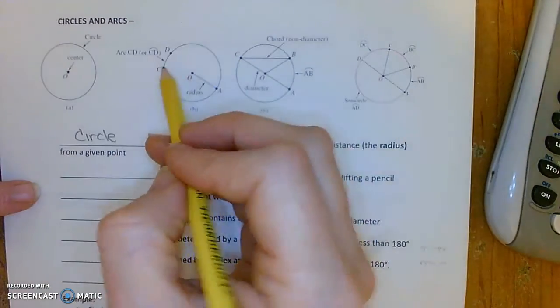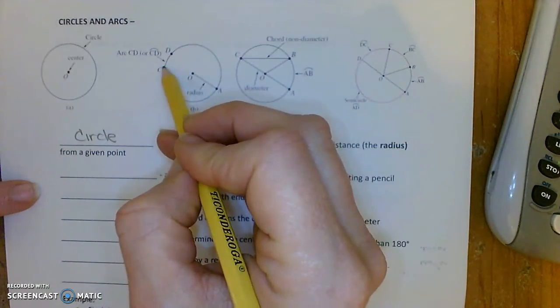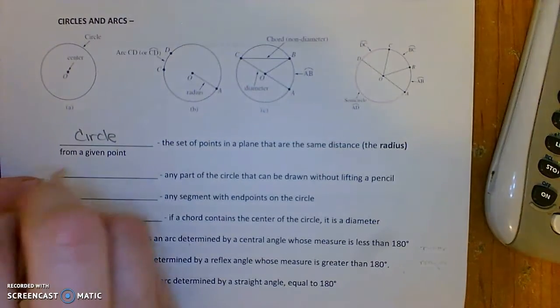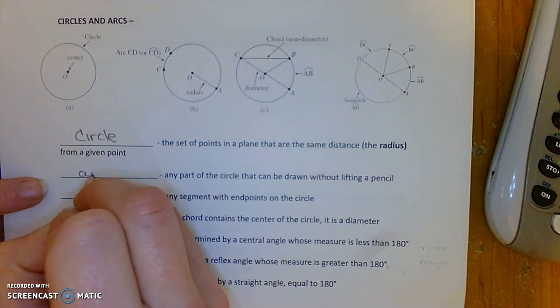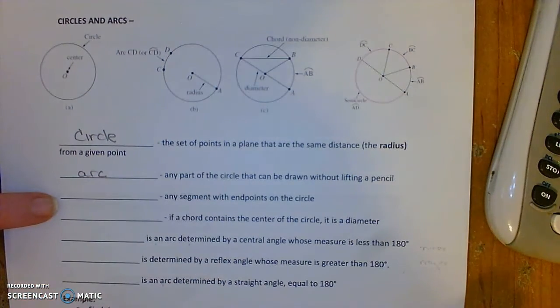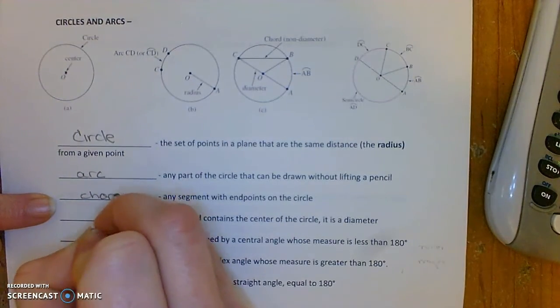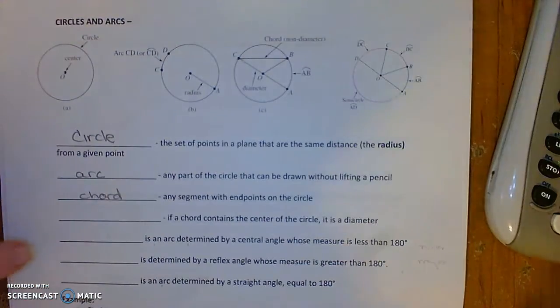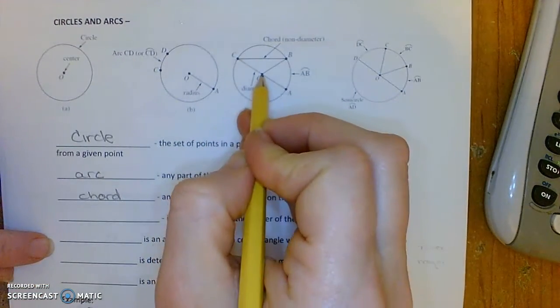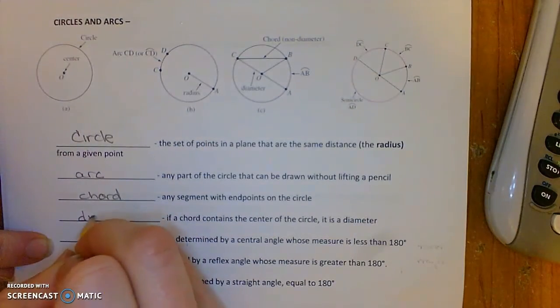Alright, any of the points of the circle that can be drawn without lifting your pencil from the paper, that's called an arc. And any segment, line segment with endpoints on the circle is called a chord. Now there's some special types of chords, like if the chord goes through the center of the circle, you call that a diameter.